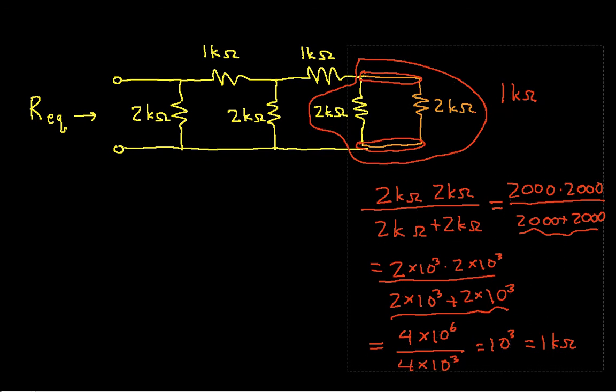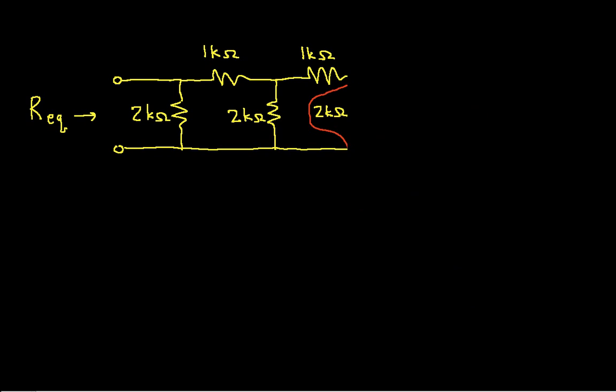Chop away all this stuff, and chop away some more stuff here. So now I can take this guy and replace it by a 1k ohm resistor. Okay, well, now I want to look for a combination that I can combine again.